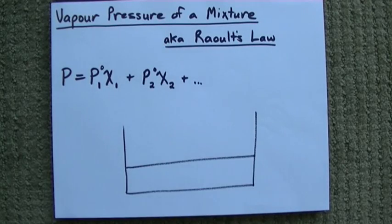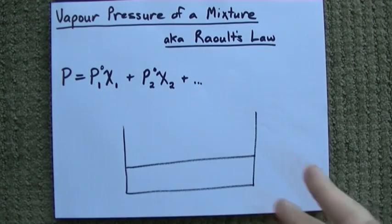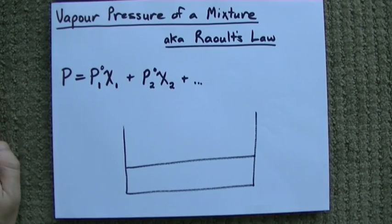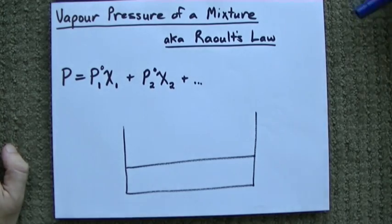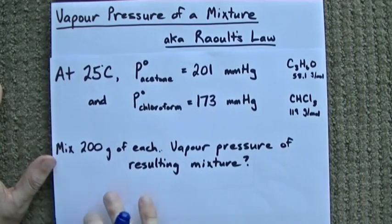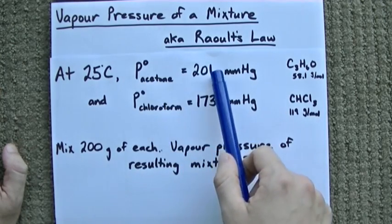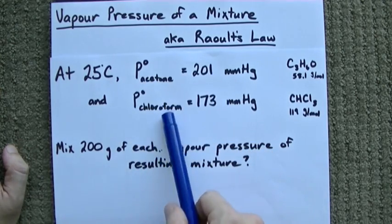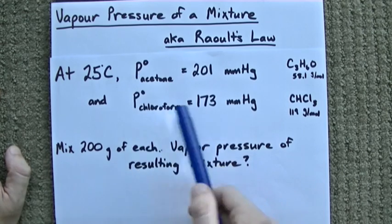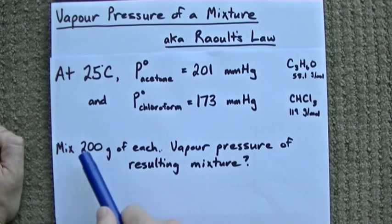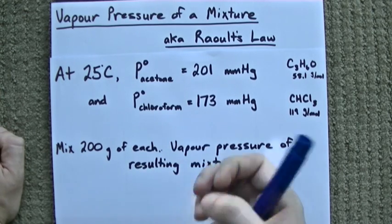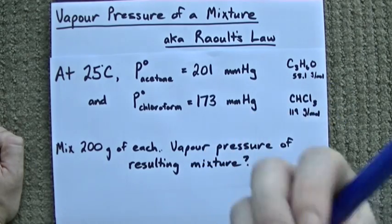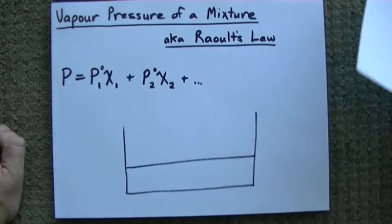Alright, a little video on Raoult's Law, which is the vapor pressure of mixtures. Take a look. If you're asked a question where you're given the vapor pressure of acetone and the vapor pressure of chloroform, I mean this could be any two molecules, two vapor pressures, and you're told you have a mixture of the two, you can figure out what the vapor pressure of the mixture is with Raoult's Law.